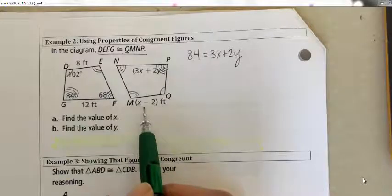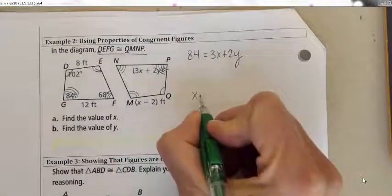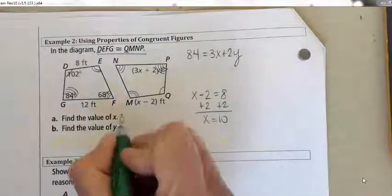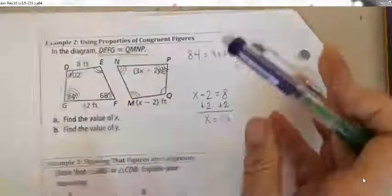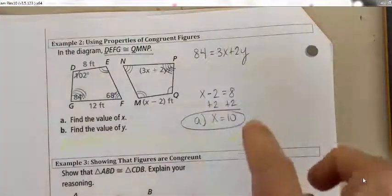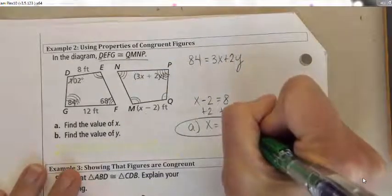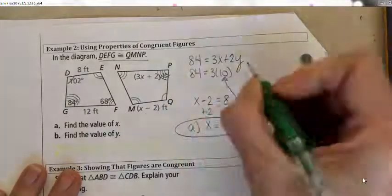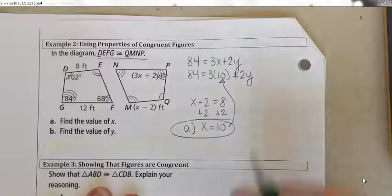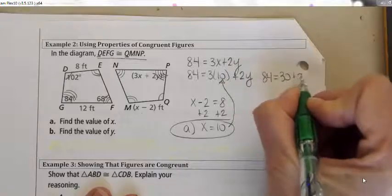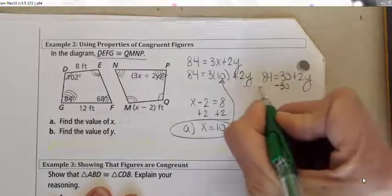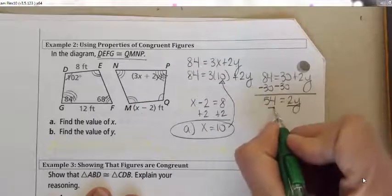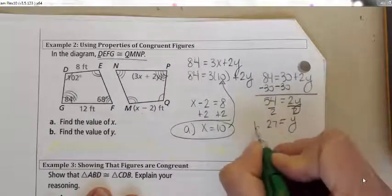That equation is easy to solve: add 2 to both sides and x equals 10. Now I can plug that into the first equation: 84 equals 3 times 10 plus 2y, so 84 equals 30 plus 2y. Subtracting 30 from both sides gives 54 equals 2y, and dividing both sides by 2 gives y equals 27.